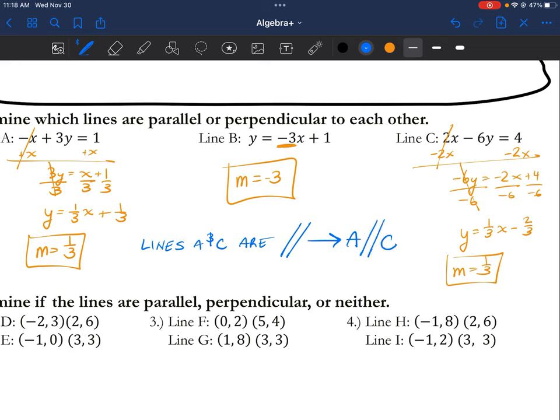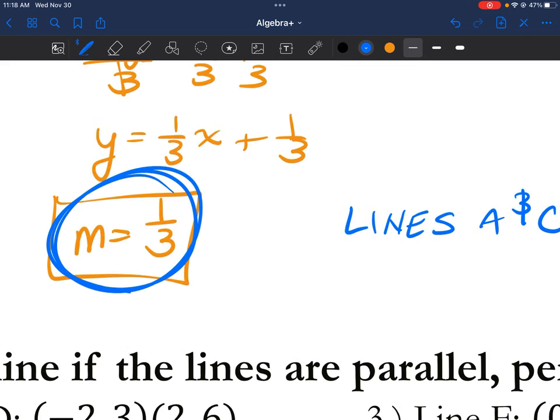Then below that, are any of them perpendicular? Well, I know these two are parallel. Perpendicular means opposite reciprocal. If I take the opposite of 1 third, I get negative 1 third. If I take the reciprocal, I get negative 3.